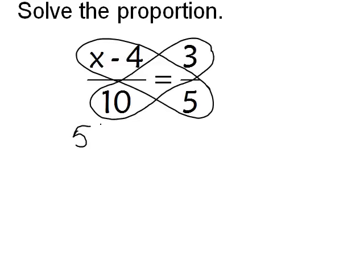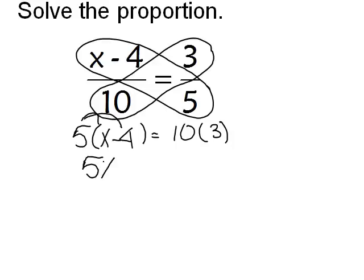So I'm going to take 5 times x minus 4. And that's going to equal 10 times 3. I'm going to distribute my 5. I'm going to simplify. So 5 times x is 5x.